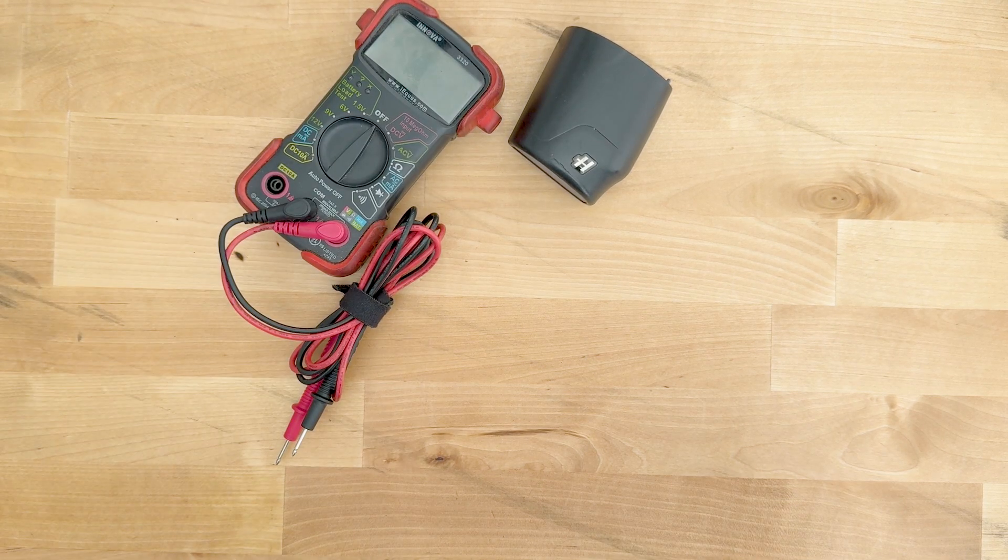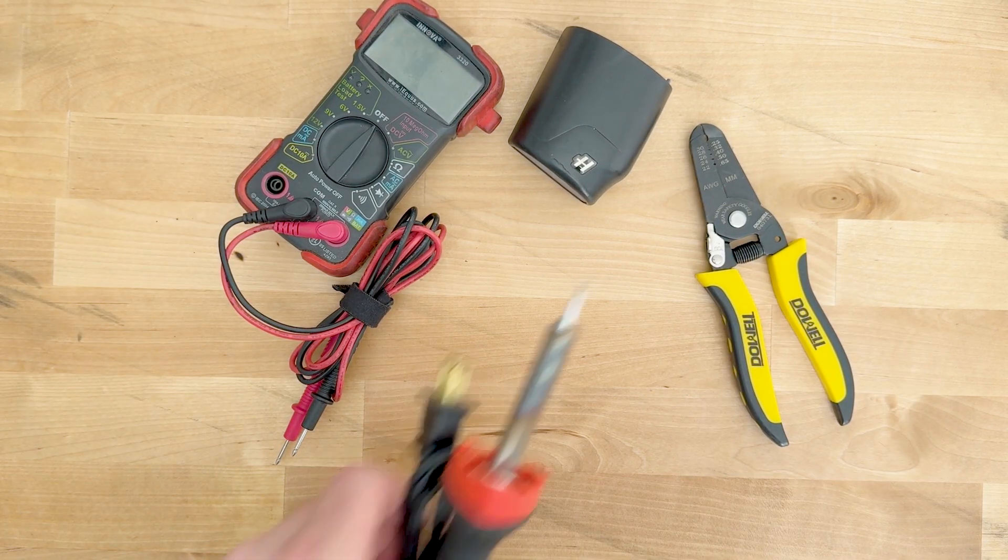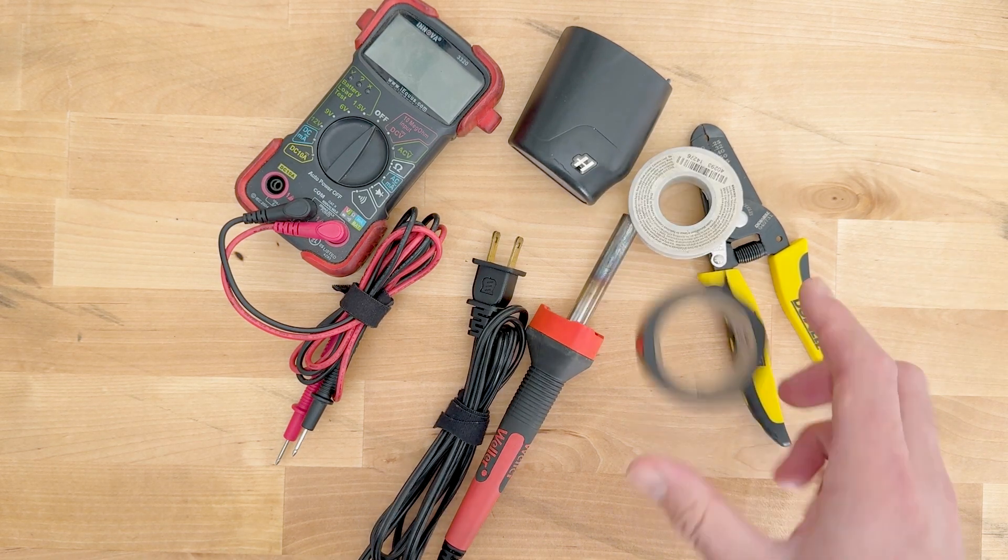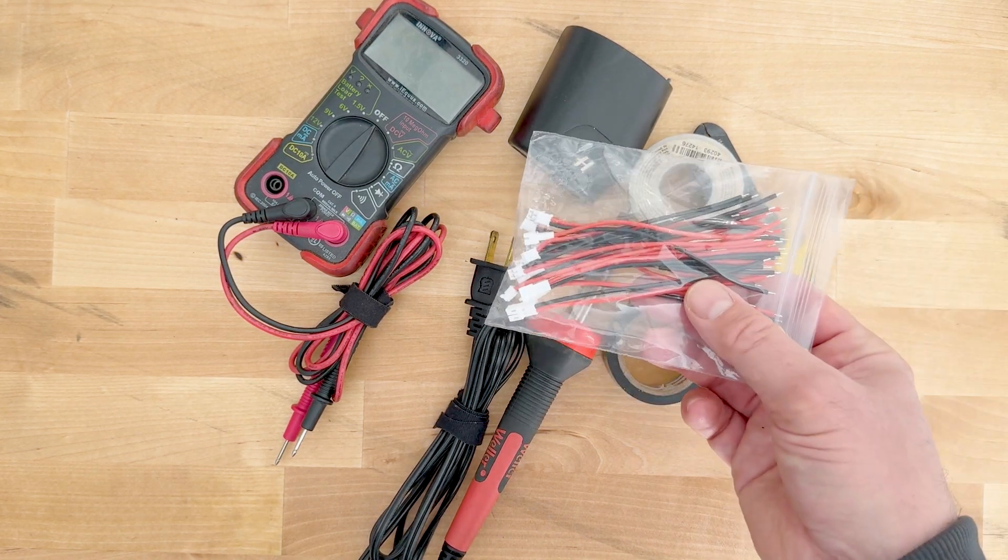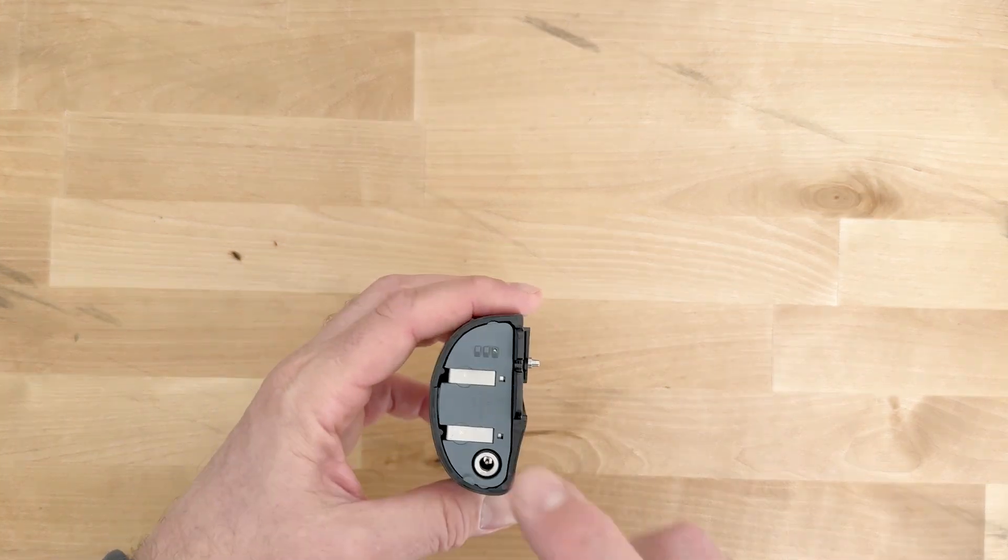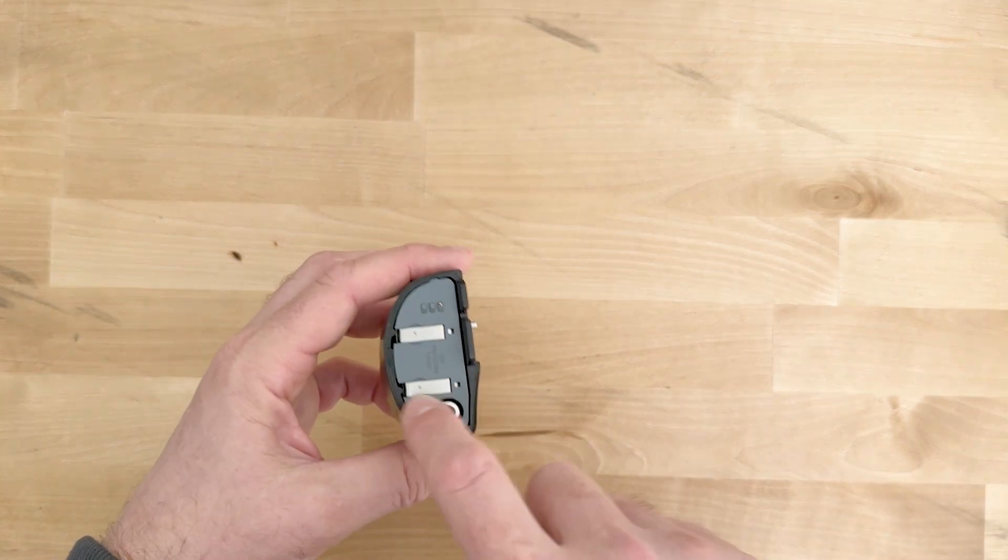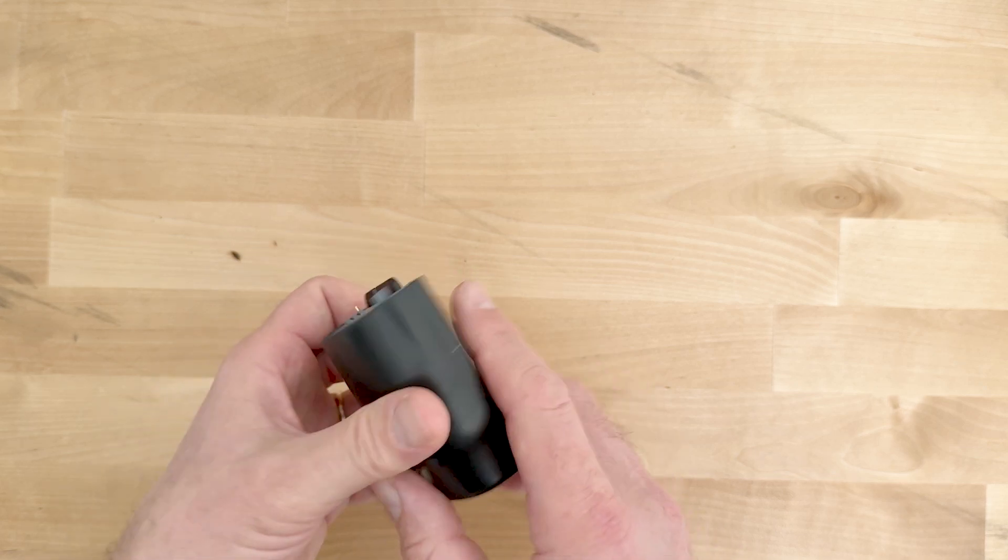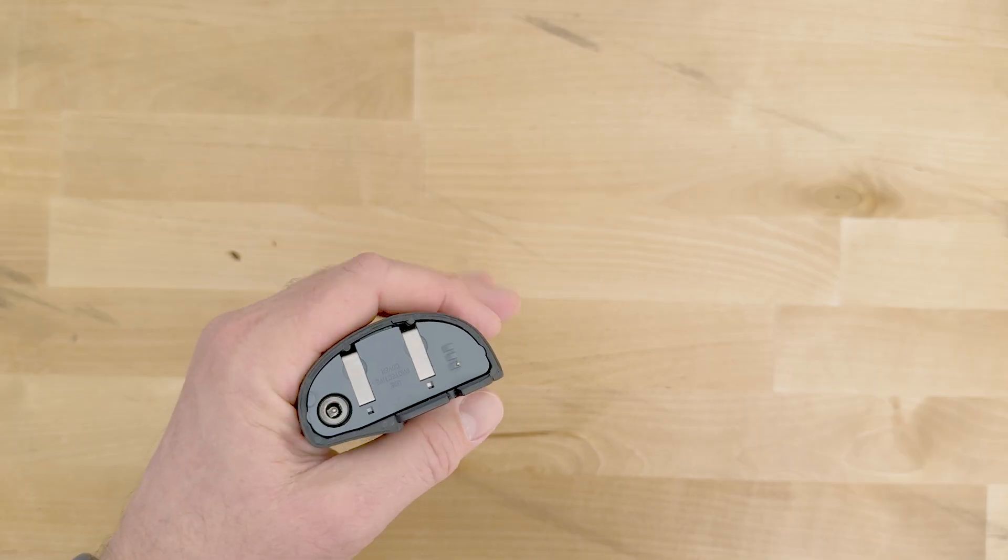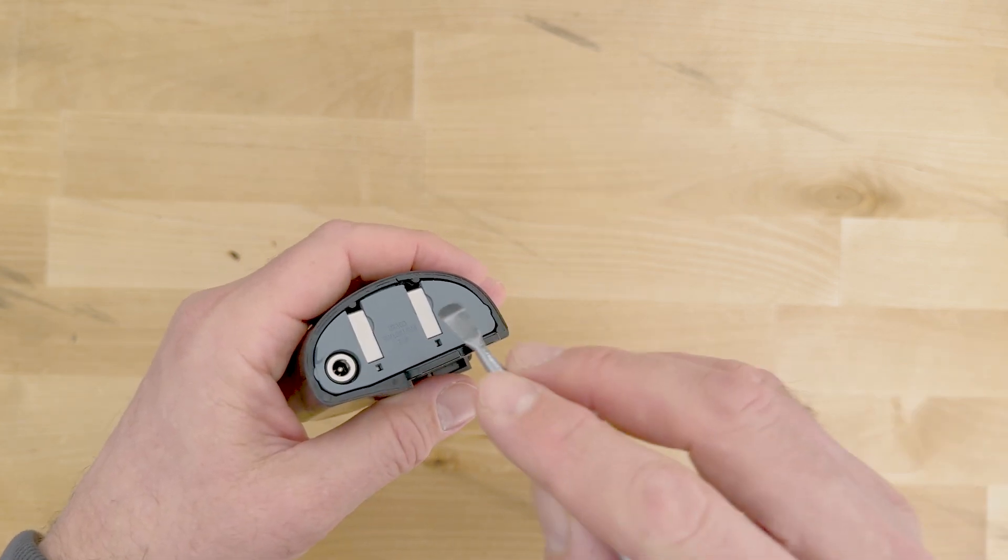So you need a multimeter, wire strippers, soldering gun, solder, electrical tape, and these connectors. Opening up is not difficult, there's two tabs and you'll just need a little pry tool to open up the top.